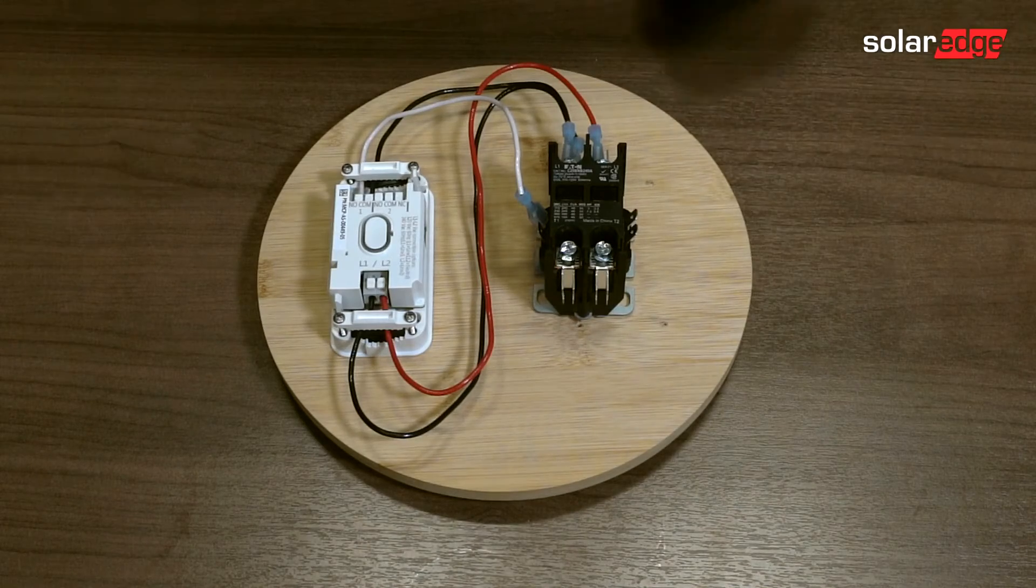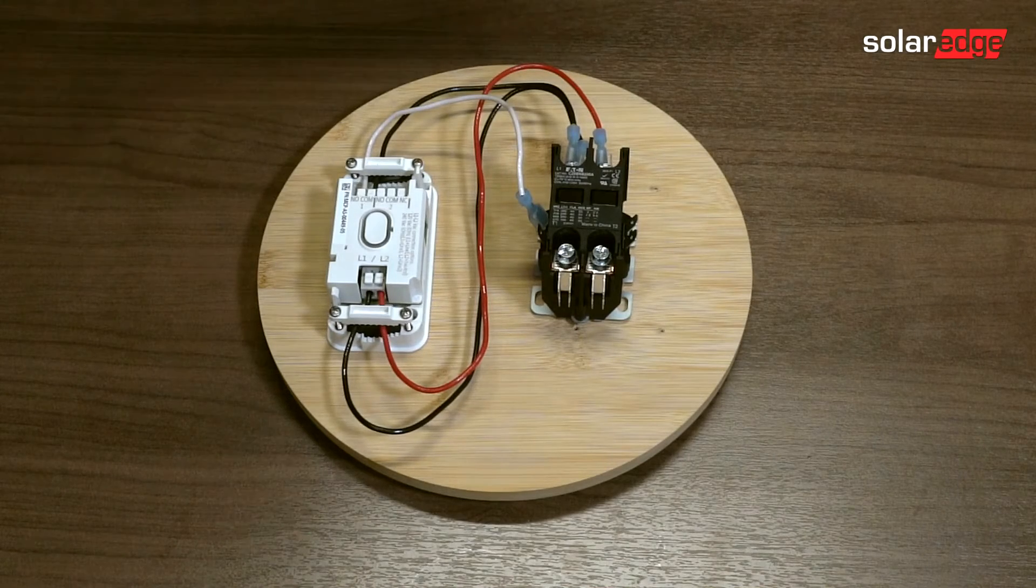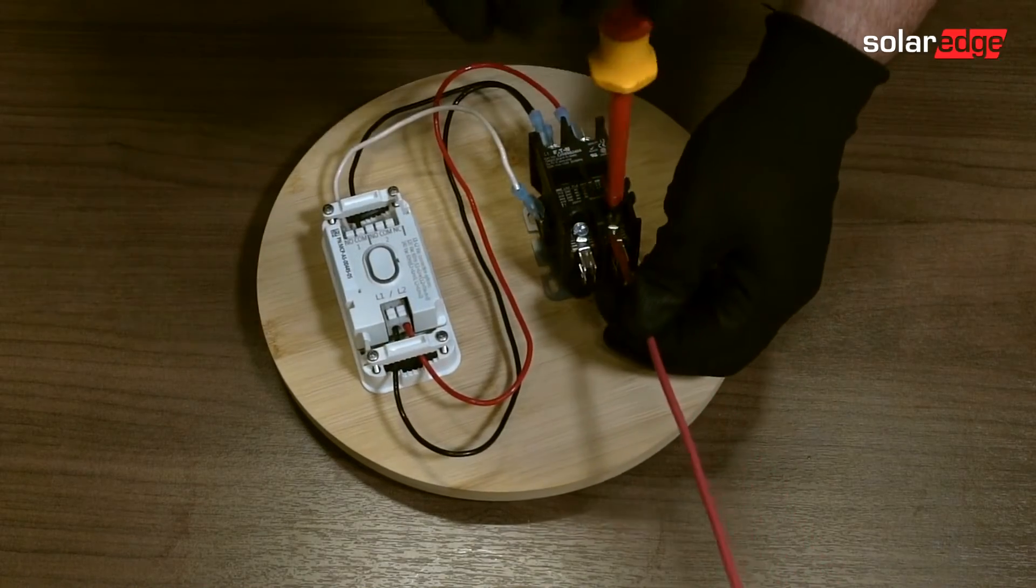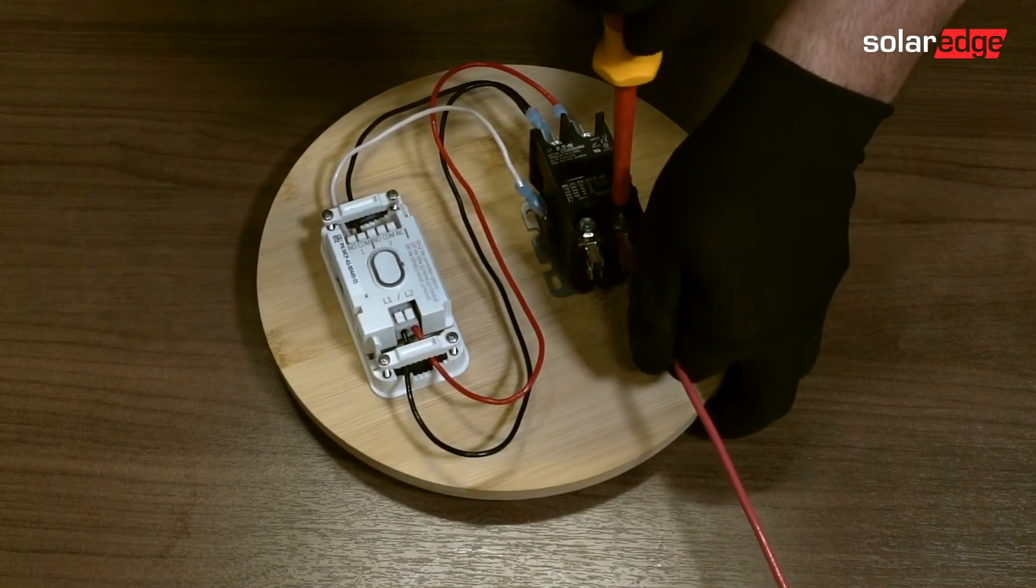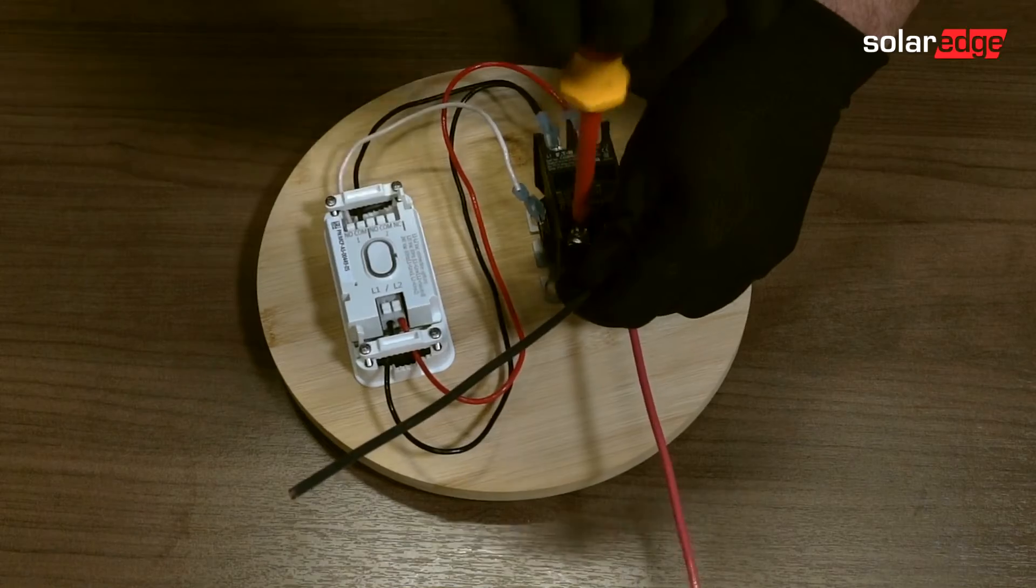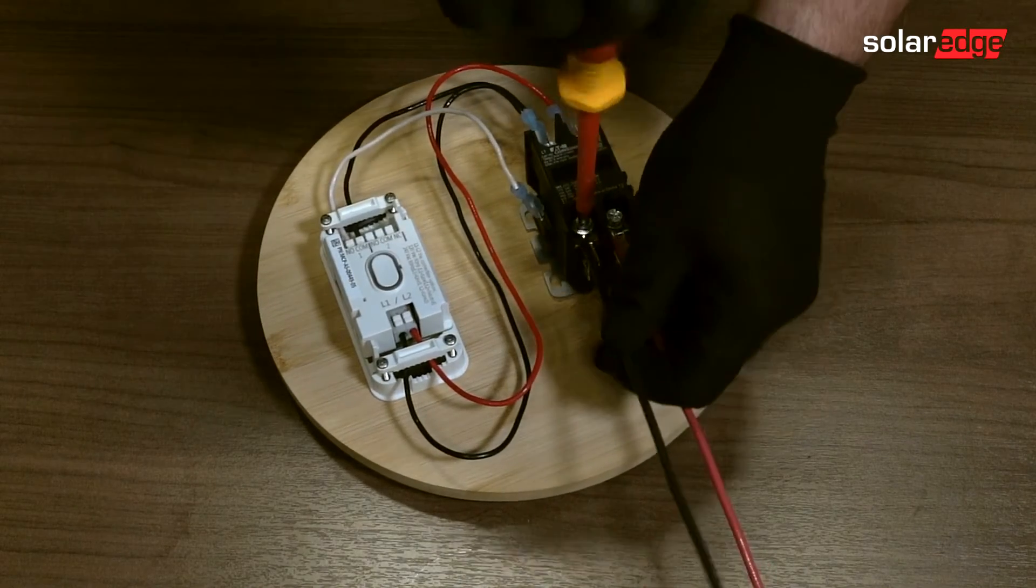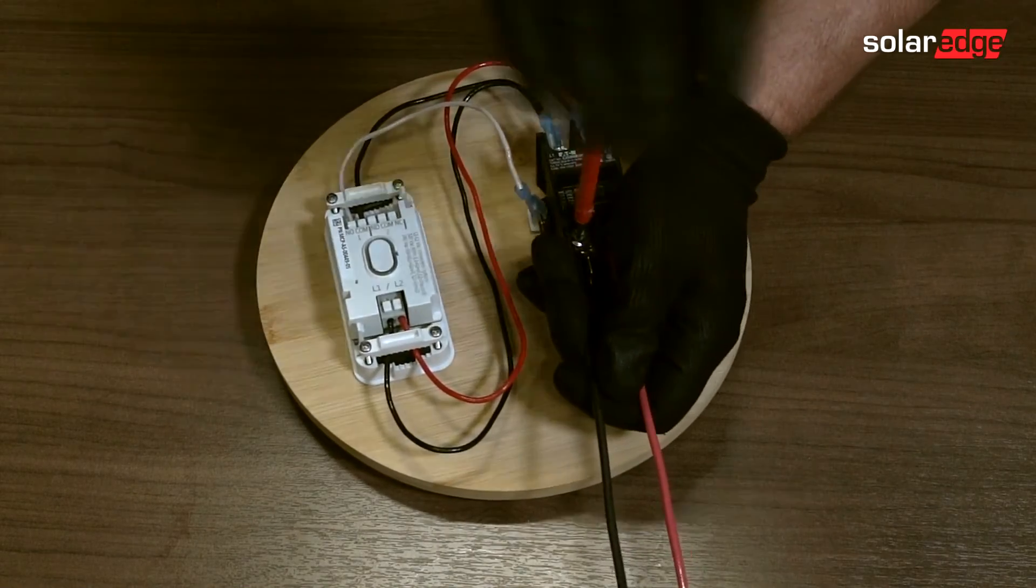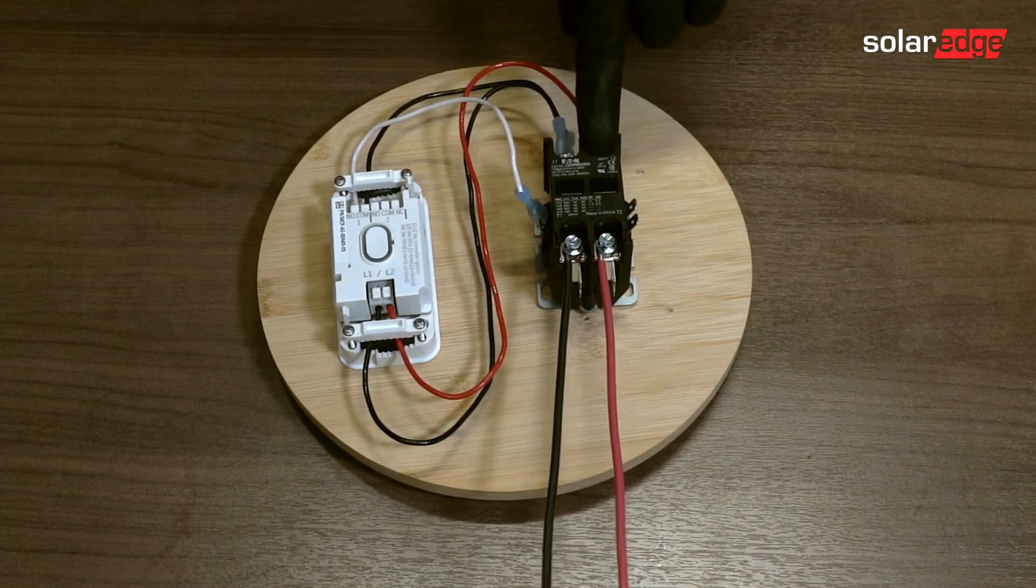Now we have the wires that are going to go back to the load. So this is the load side. And whatever wires we took out of our breaker would go back to the load. In this case, I have a two pole load. So that goes to the load that I took out of the breaker. And then we'd wire from the breaker and from the neutral bar to the supply side and to the coil.